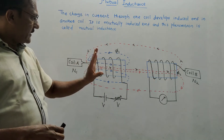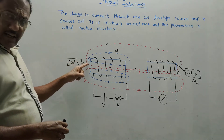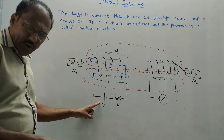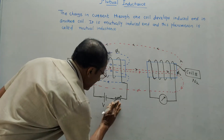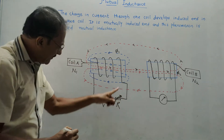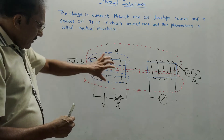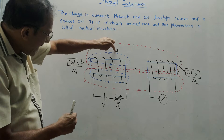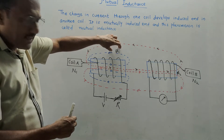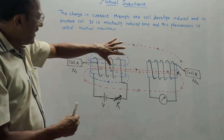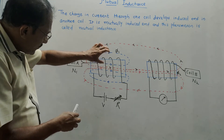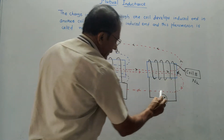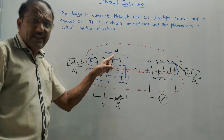First we will discuss the concept of mutual inductance. I have considered two coils: coil A containing N1 number of turns, coil B containing N2 number of turns. Coil A is connected to a battery or voltage source V and one variable resistance. Due to applied voltage, a current is developed and some electric flux, phi1, is developed in coil A — called the self-induced flux. Some of the flux developed in coil A gets passed through coil B, as shown by the red dotted lines. This is called mutual flux.